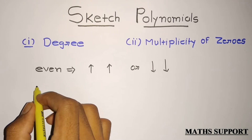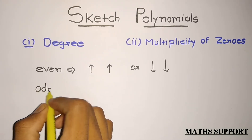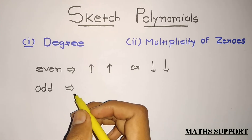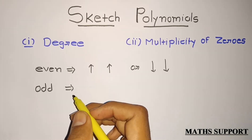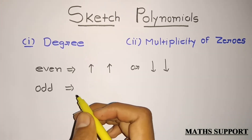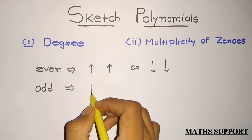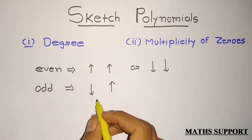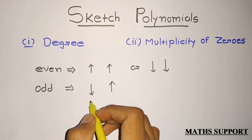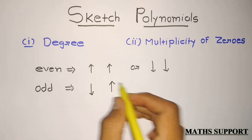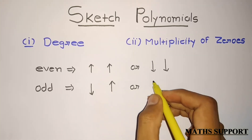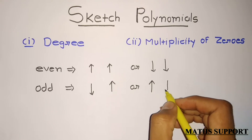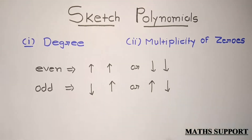If your degree is odd, in this case your one end will be upward and the other will be downward, or vice versa. For a positive leading coefficient, your polynomial will start from downward and go upward. And for a negative leading coefficient, it will start from the positive side and go to the negative side.